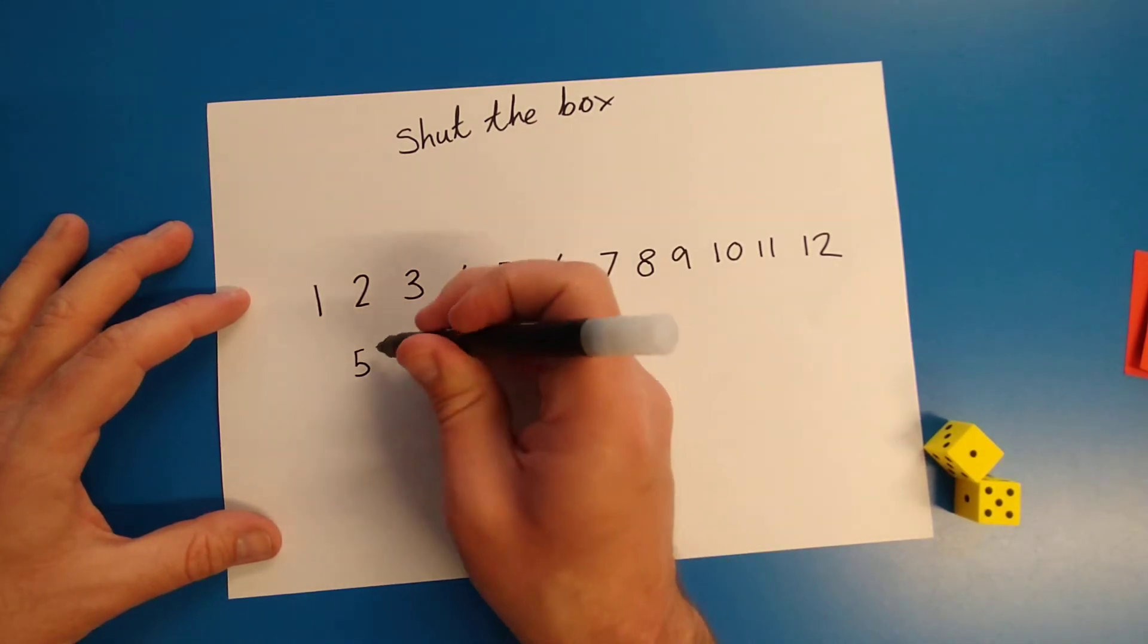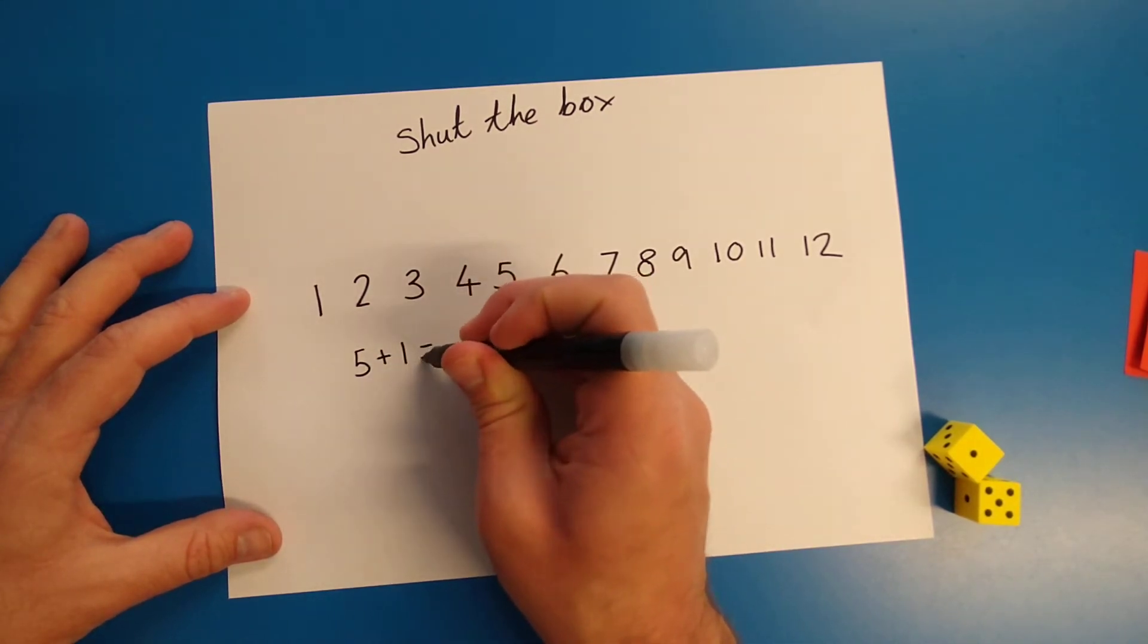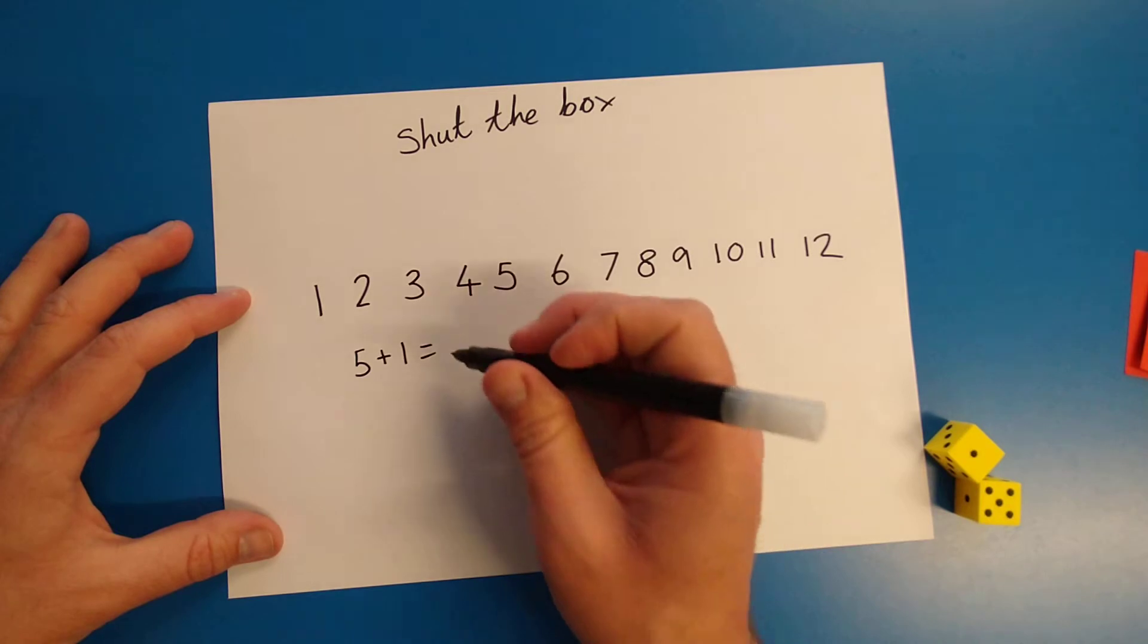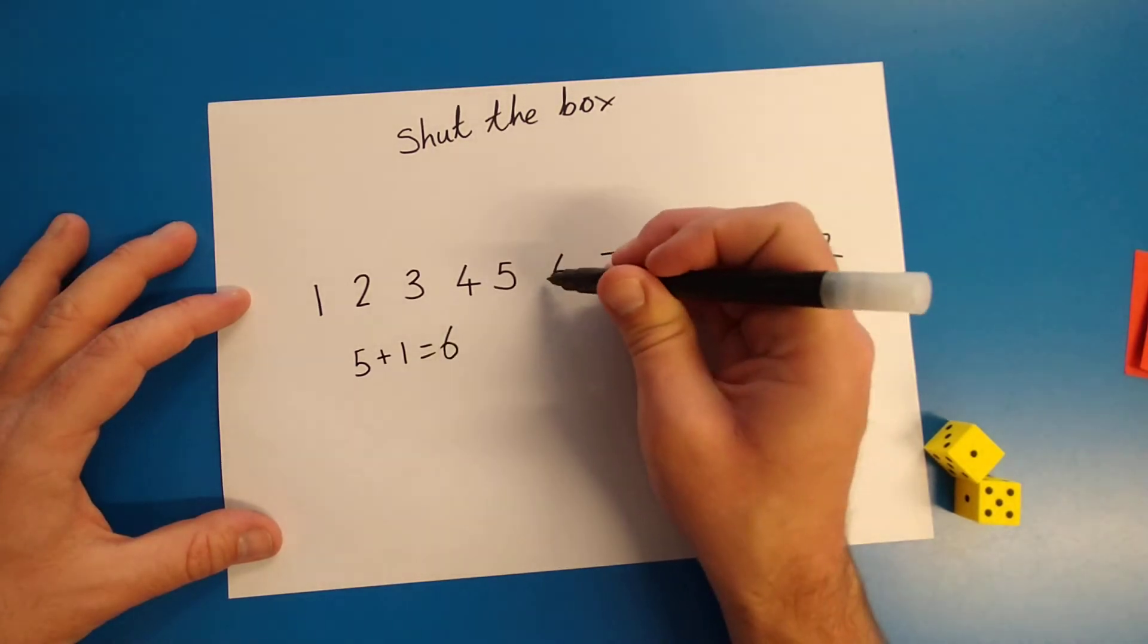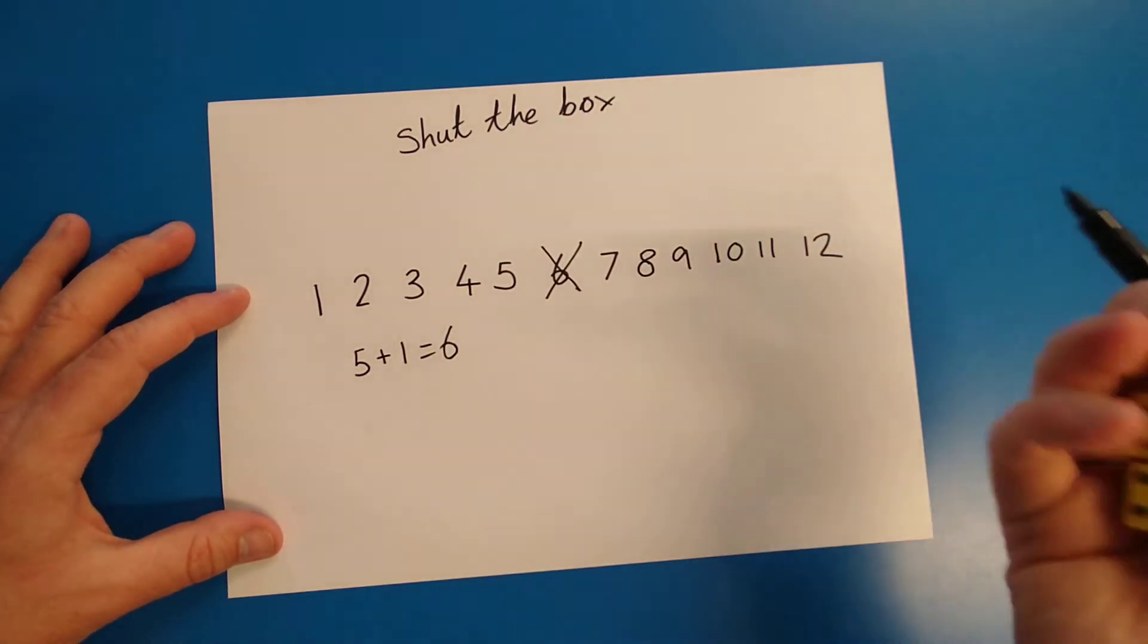To start off, I'm going to add them. So I've got five and one. What does that equal? Six. So I'm going to get my six and go.